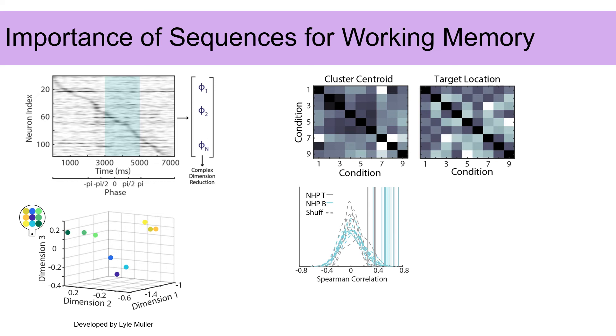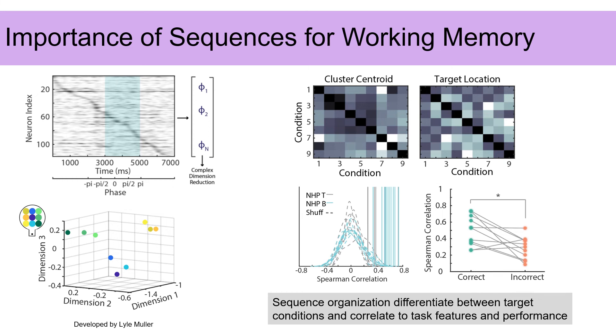Each circle here represents a cluster centroid for a different condition. And as you can see, they're clearly separable based on temporal sequence structure alone.